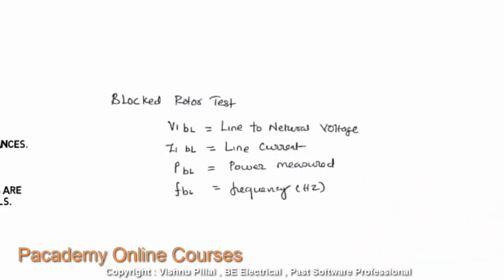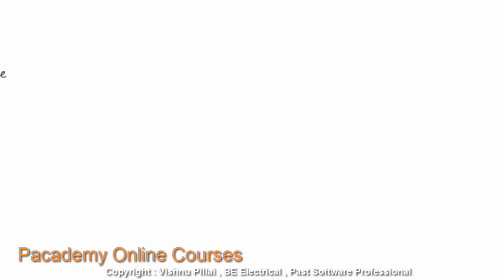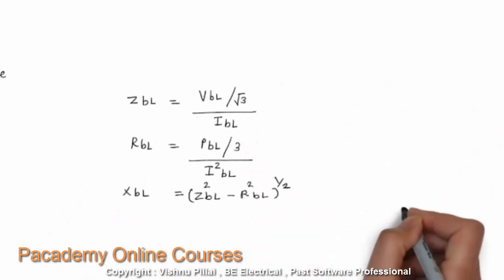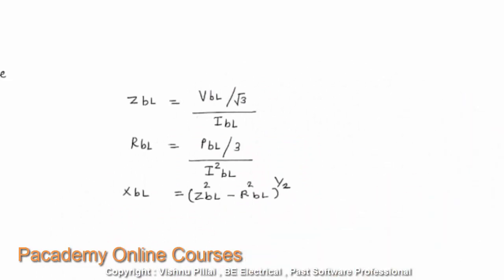In the blocked rotor test, the line-to-neutral voltage VBL is measured, I1 is the line current measured by the ammeter, power is measured using the two-wattmeter method, and the frequency is noted. The impedance during the blocked rotor test is computed as (VBL/√3) / IBL — essentially V divided by I.